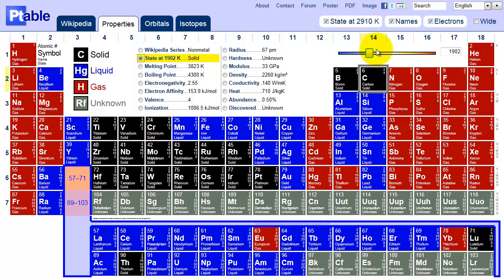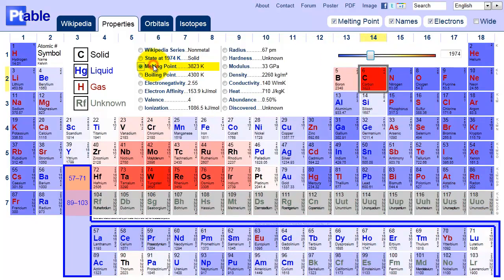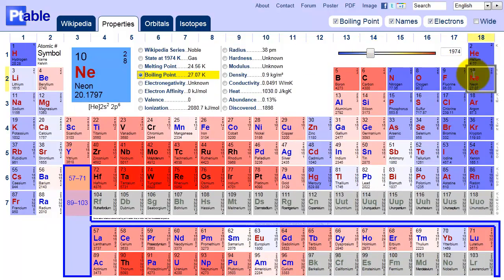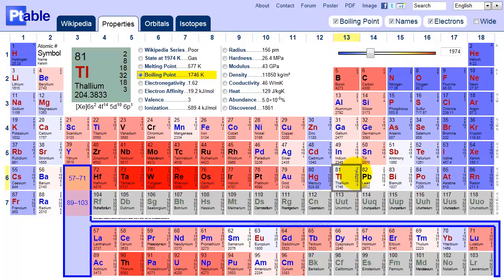Melting and boiling point are more interesting. The darkness of an element's background color indicates how far away its melting or boiling point is from the selected temperature. Here we can see that neon's boiling point is much colder than 2000 Kelvin, and osmium's is much hotter. Whereas thallium's is just a little colder, and indium's just a little hotter. As with all datasets, each element's boiling point is shown in the Properties area, as well as in the Atomic Weight area.